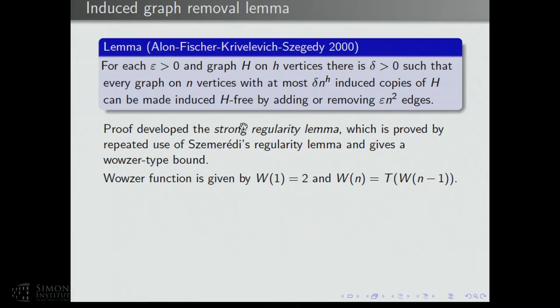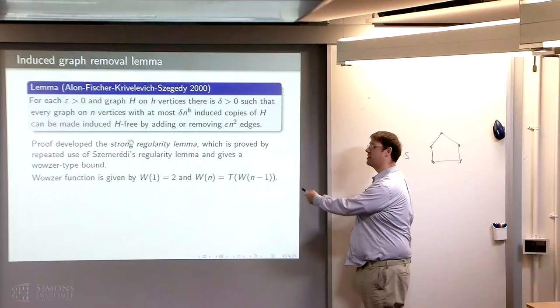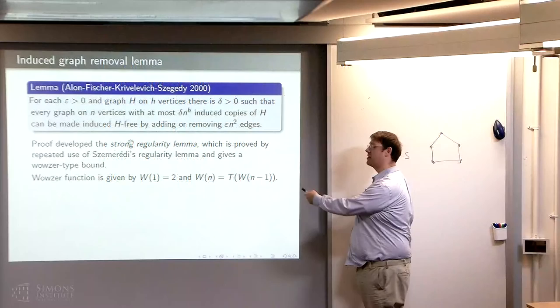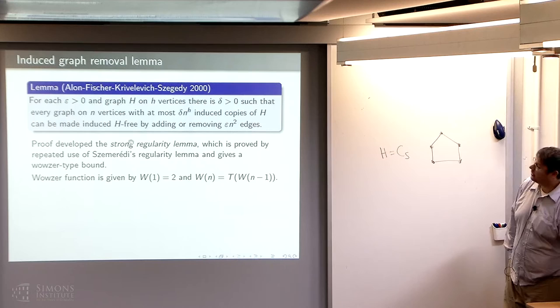The proof develops a strong regularity lemma, proved by repeated use of Szemerédi's regularity lemma, giving a Wowser-type bound. The Wowser function w(n) is defined by w(1) = 2, and w(n) is applying the tower function to w(n-1). These are very fast-growing functions.